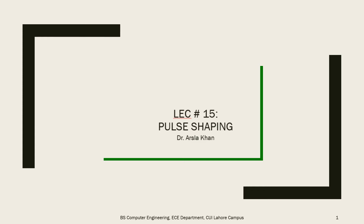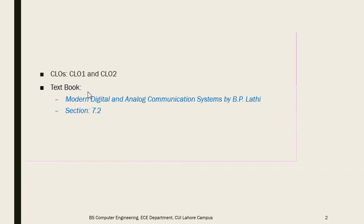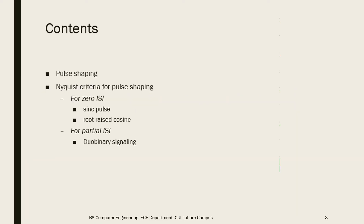Lecture 15 of this series is related to pulse shaping. The CLOs covered are CLO1 and CLO2, present in section 7.2 of the textbook. The contents covered in this lecture are related to pulse shaping, the Nyquist criteria for pulse shaping, zero ISI, and partial ISI.